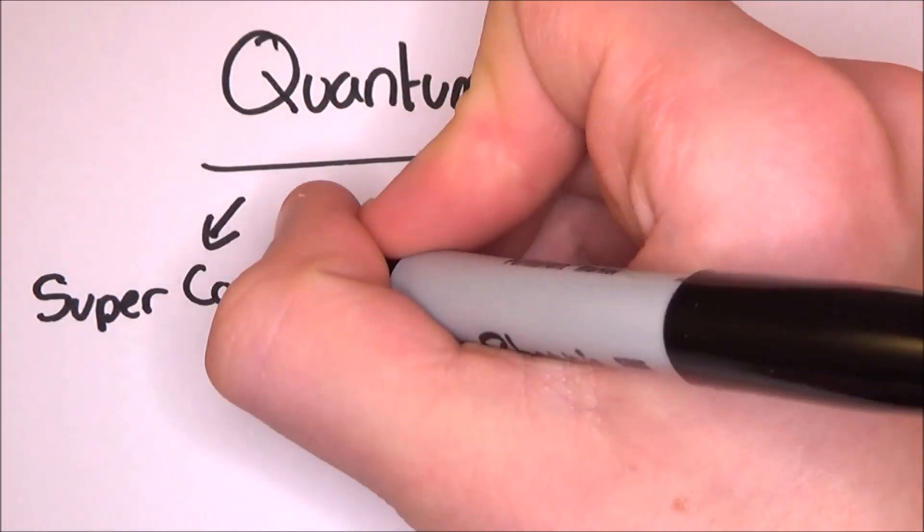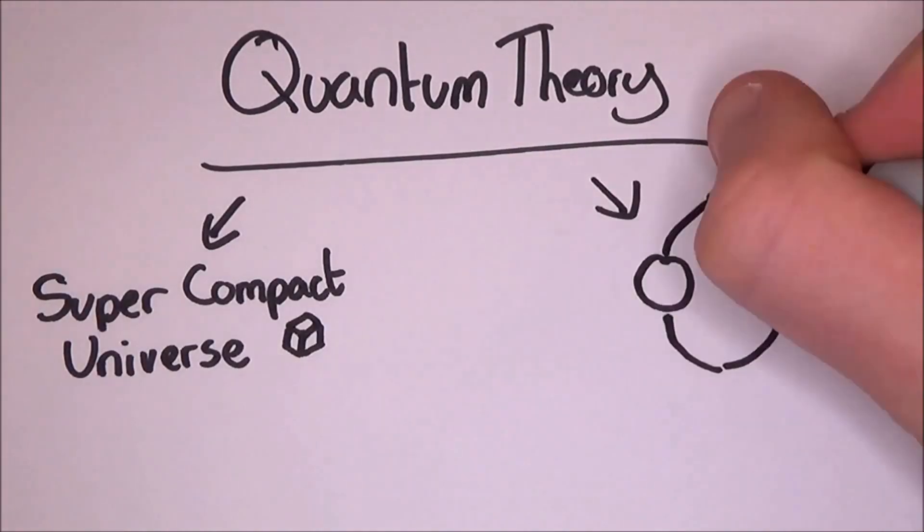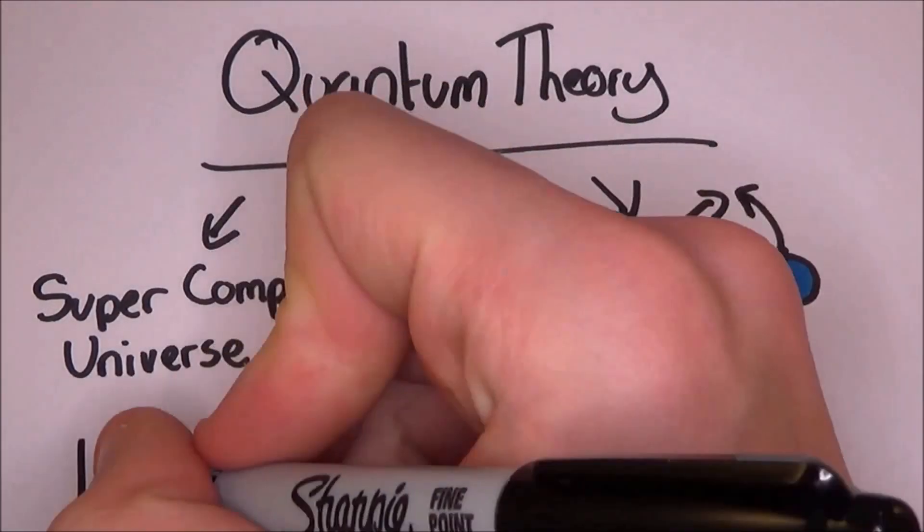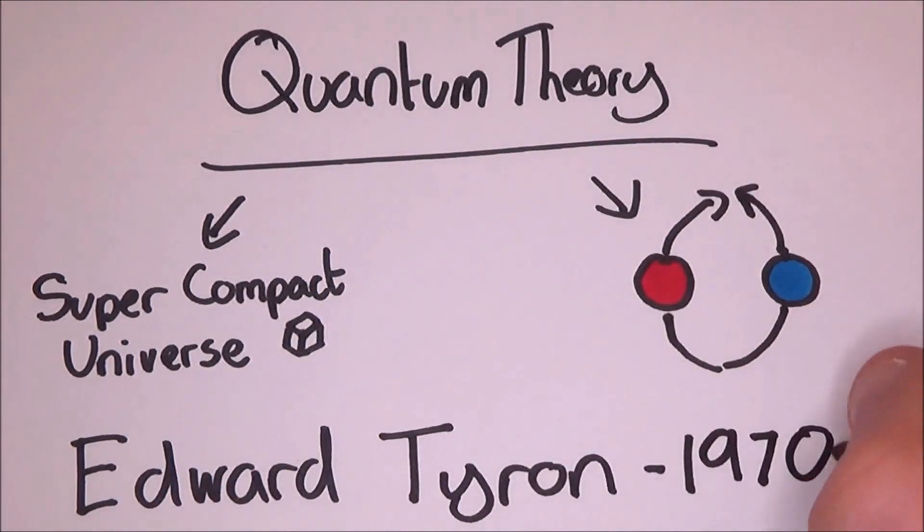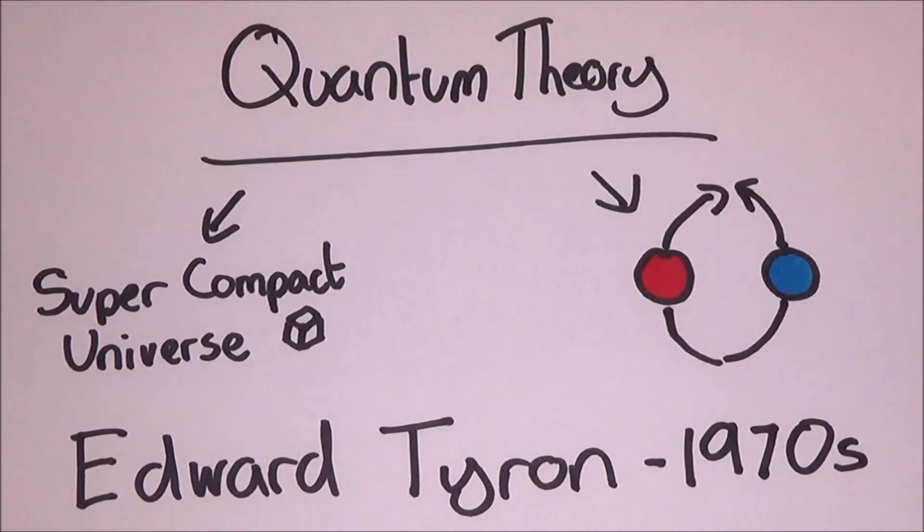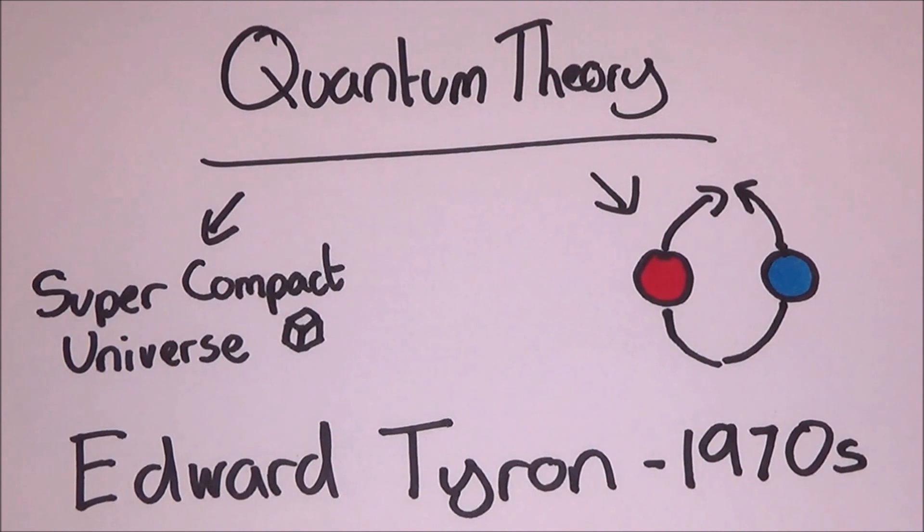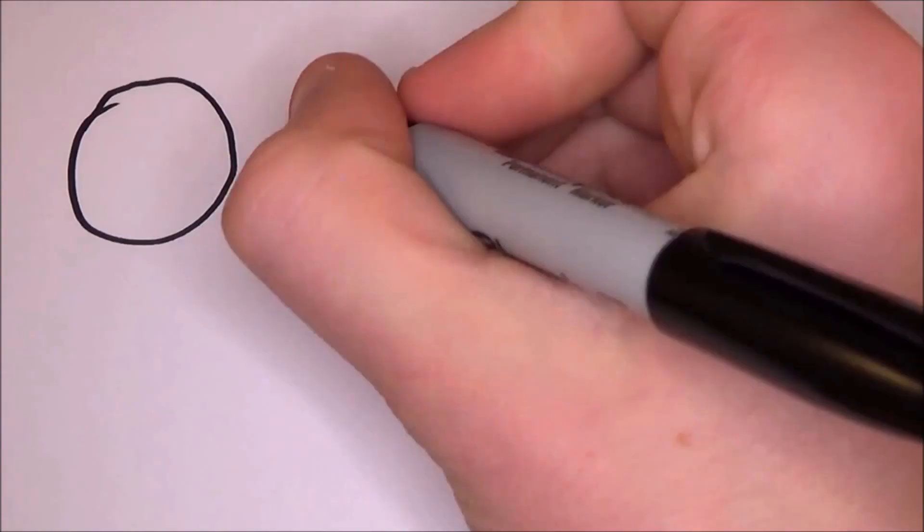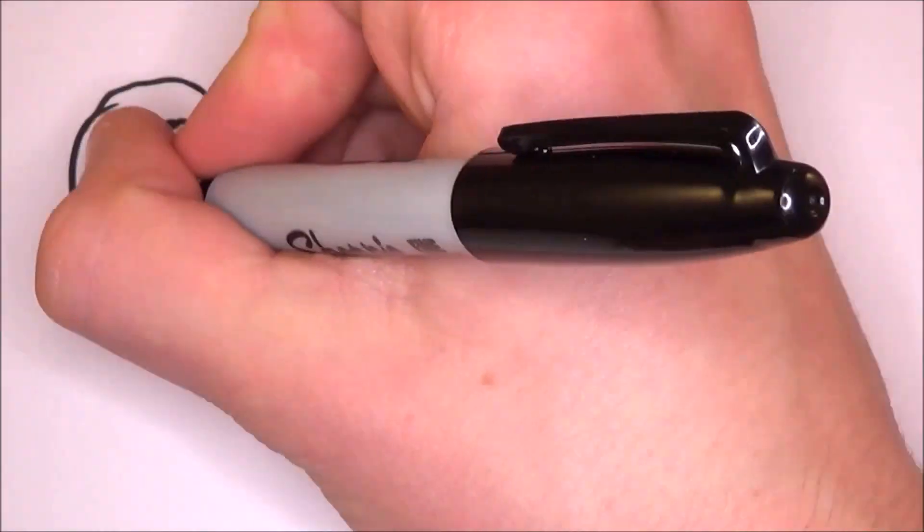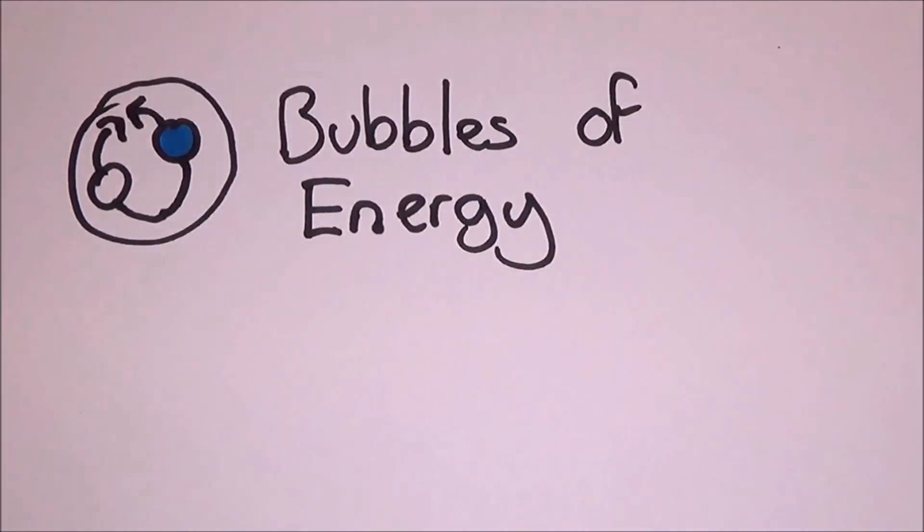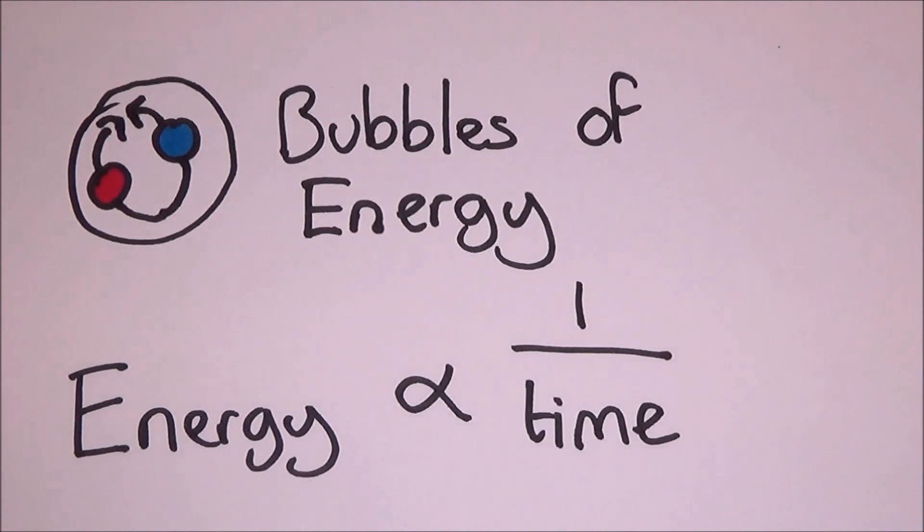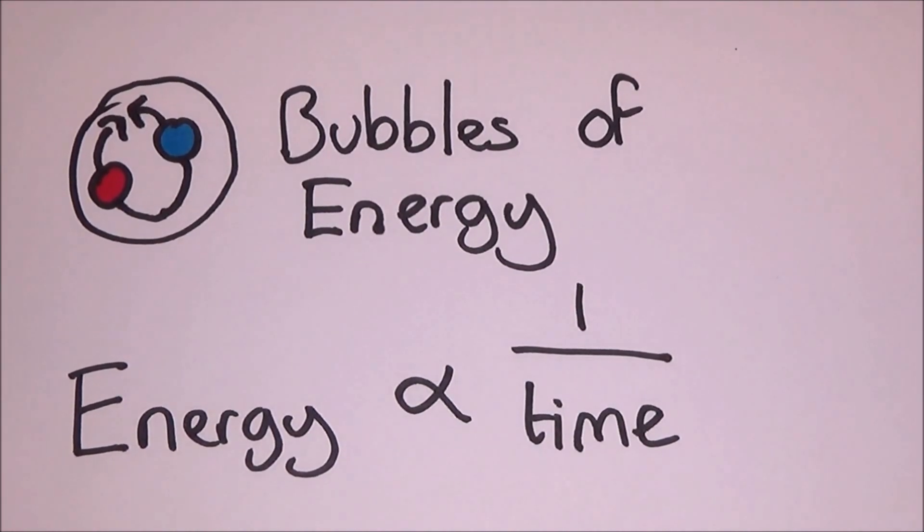Quantum theory allows for many things. It allows for the entire universe to be viewed in its super compact form and appear out of nothing with zero energy overall. This very idea was developed by Edward Tryon at the City University of New York in the 1970s. He suggested that it all appeared out of vacuum fluctuations. It allowed for temporary bubbles of energy or pairs of particles to be created out of nothing, providing that they destroy themselves after a short period of time. The less energy that's involved means the longer that these bubbles can exist.